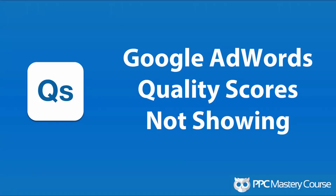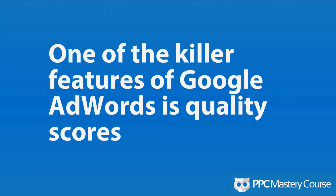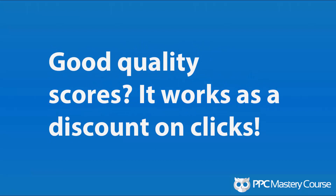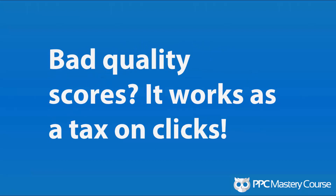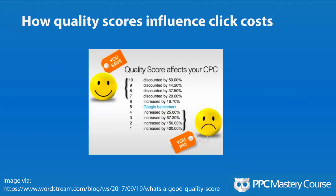What do you do when your Google AdWords quality scores are not showing up on the screen? One of the killer features of Google AdWords is quality scores. If you have good quality scores, it works like a discount on clicks. But if you have bad quality scores, it works the opposite — it's like a tax on your clicks. A WordStream study shows that a quality score of 10 discounts your CPCs by 50%, while a quality score of 1 increases your CPCs by 400%.